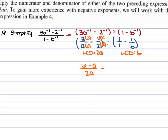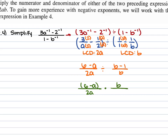For the second set of parentheses, the least common denominator is b. Multiply the first fraction top and bottom by b, giving (b minus 1)/b. From here, keep, change, flip, and simplify. The first fraction is (6 minus a)/(2a), times b/(b minus 1). Multiply straight across: b(6 minus a) all over 2a(b minus 1).